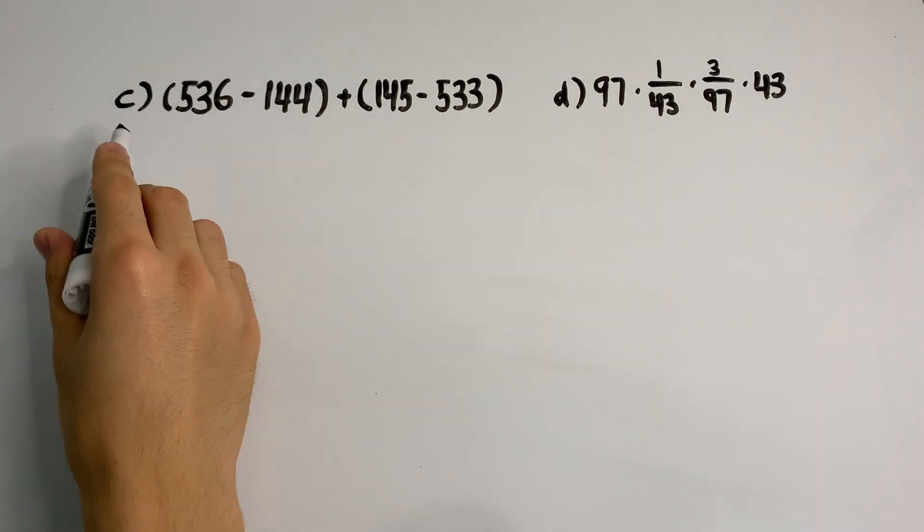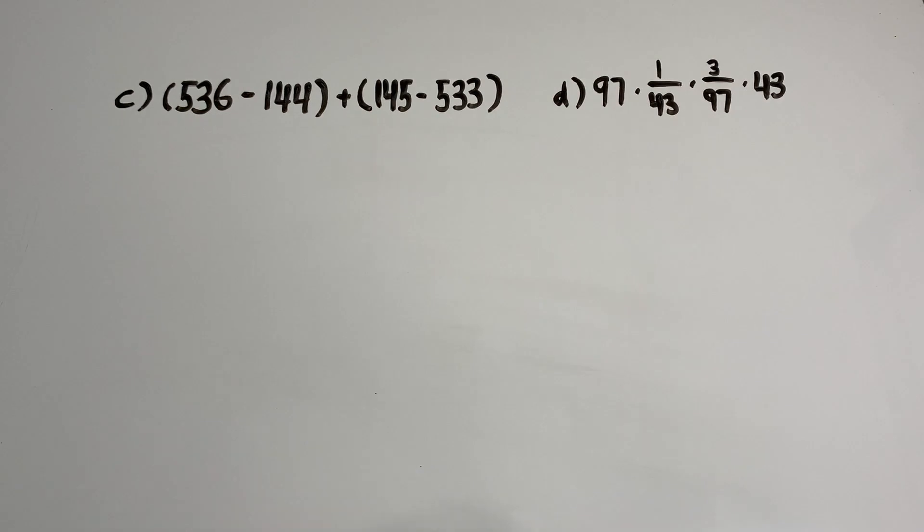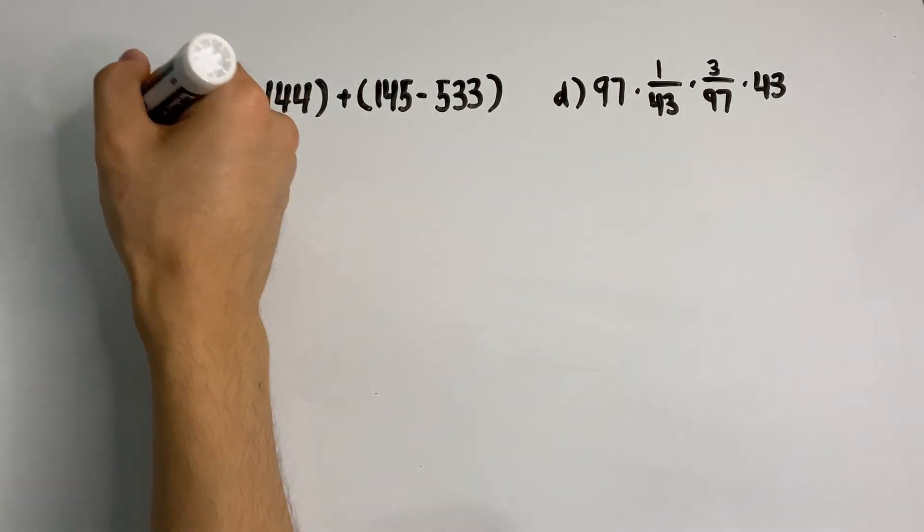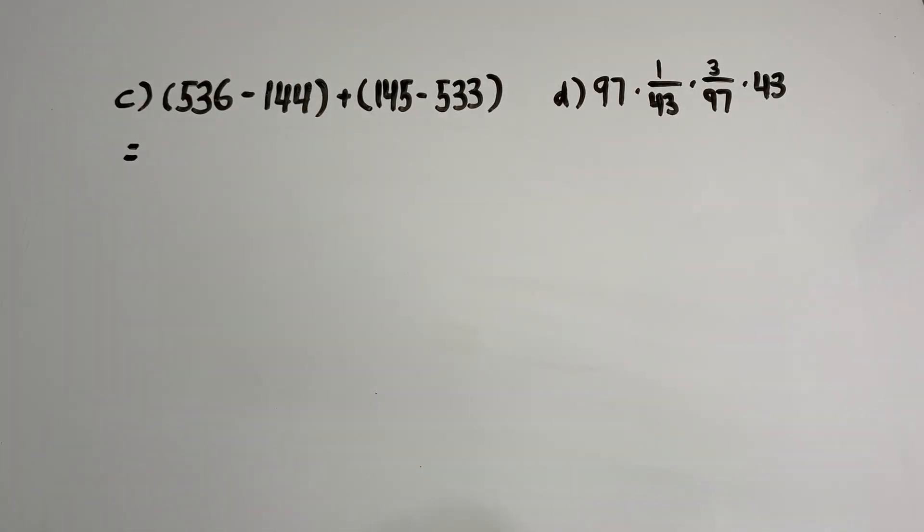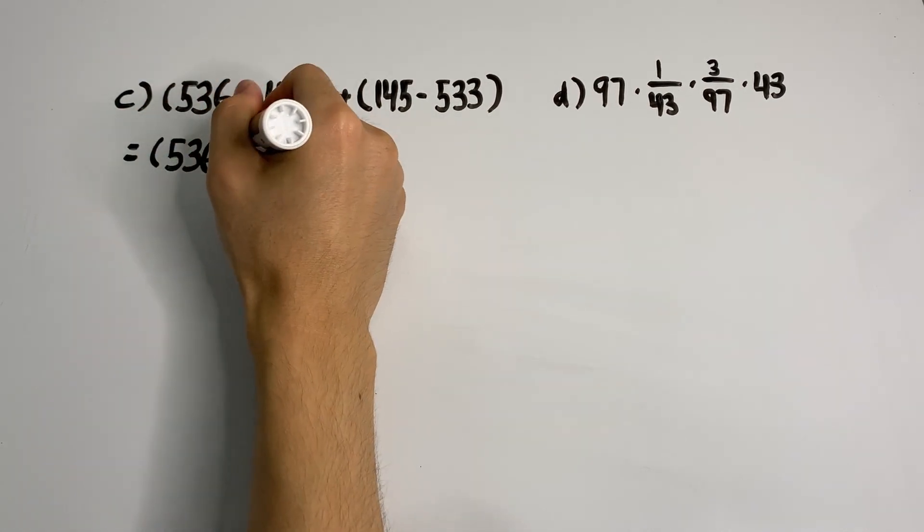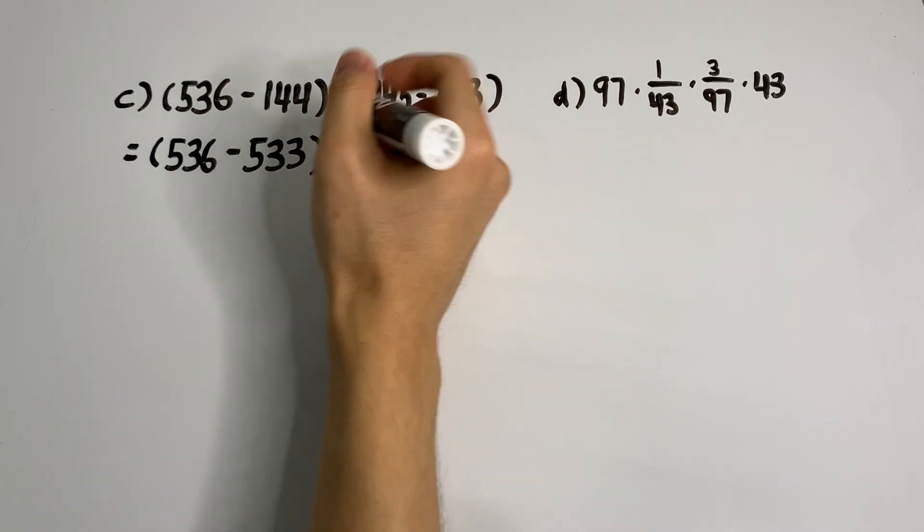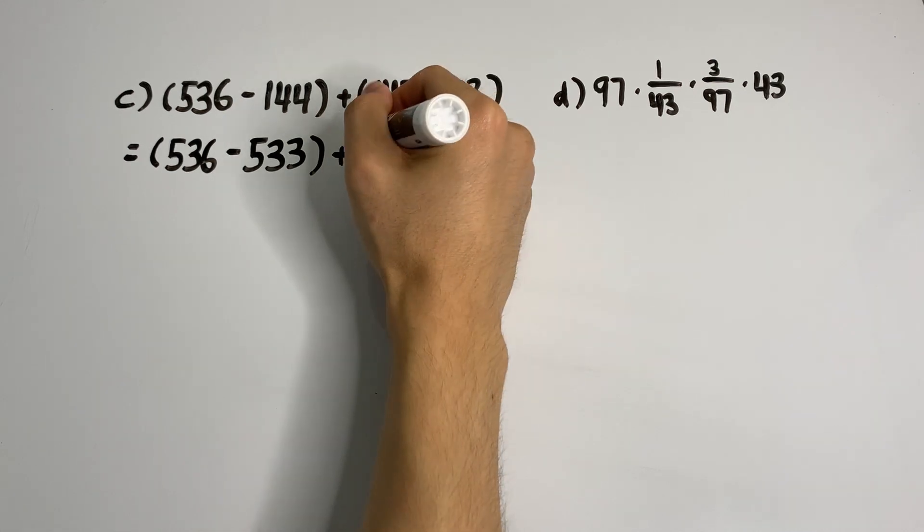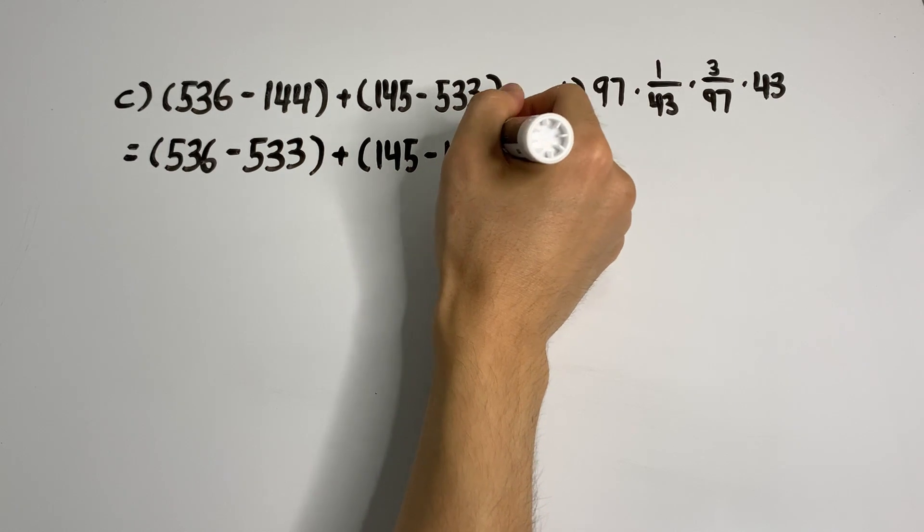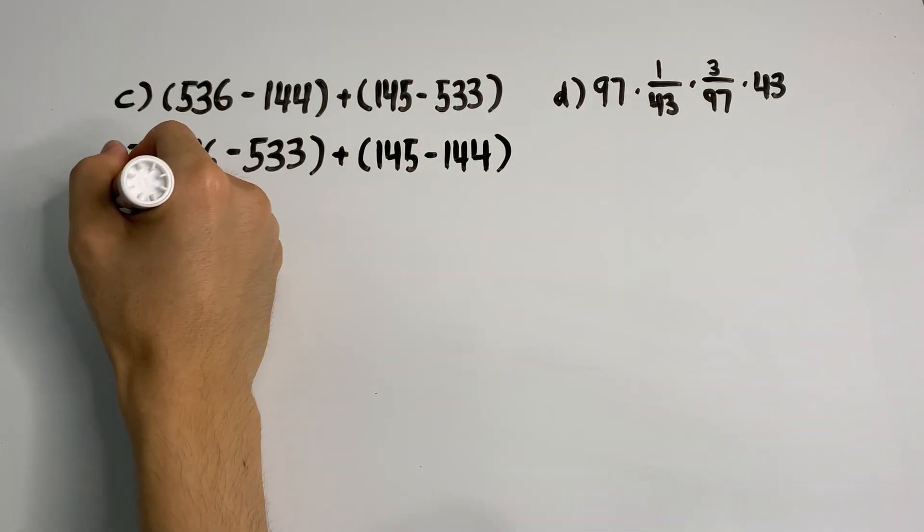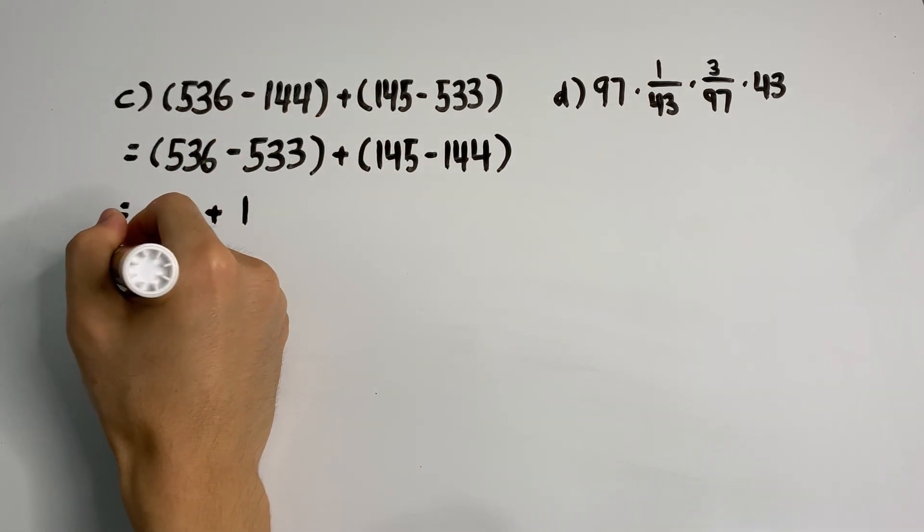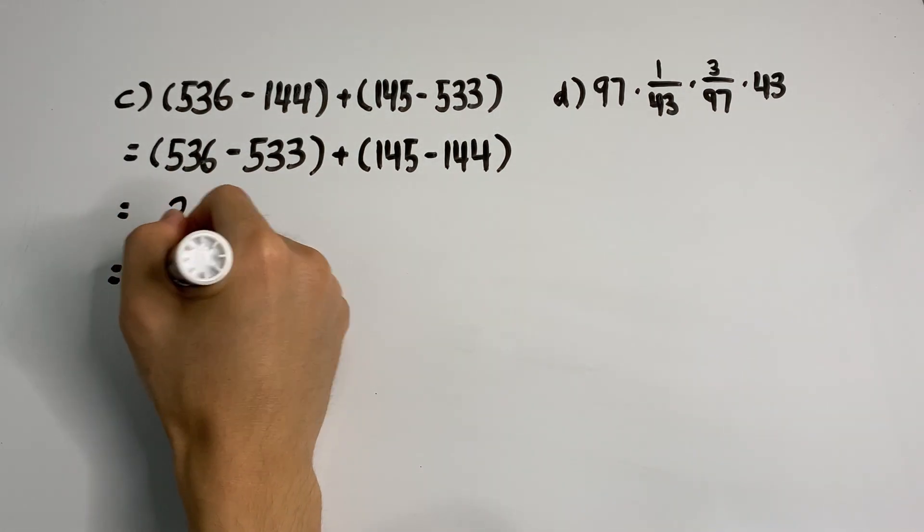So 536 minus 144 plus 145 minus 533. Instead of going from left to right, we have a better way of rearranging this to make our lives easier. The better way would be to group the two 500 terms together and the two 100 terms together because they are so close within each other. Now this is easy: 3 and 1 give a final answer of 4.